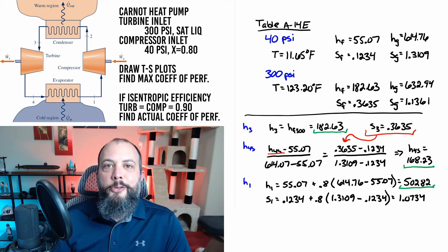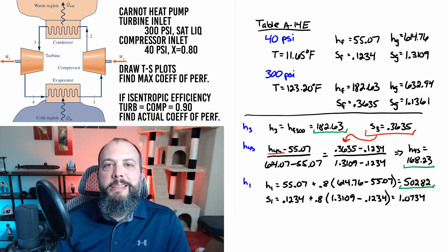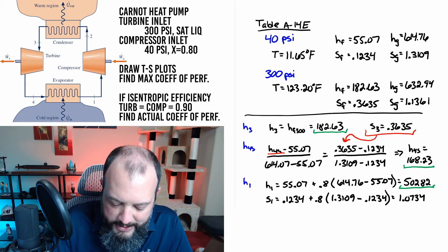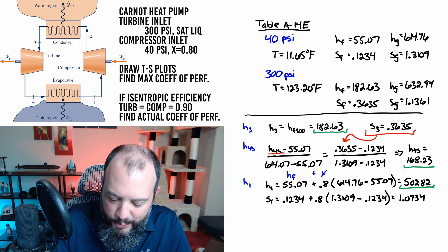For point 1 we can get enthalpy and entropy using the 0.8 quality at point 1 that we're given in the initial problem statement. And the equation that I have written here is the quality equation from back in chapter 3 where there's Hf plus quality times the quantity of Hg minus Hf.